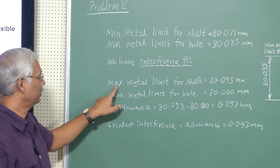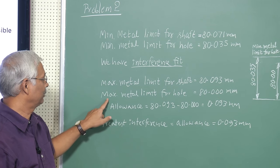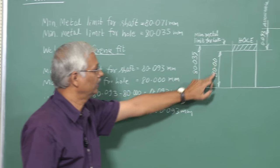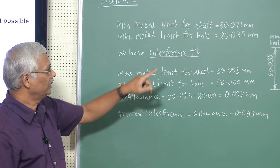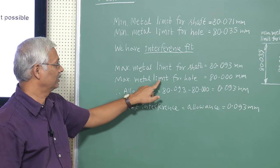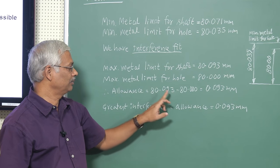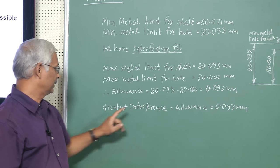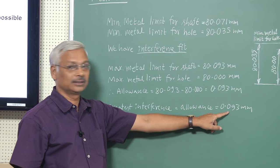The maximum metal limit for the shaft is 80.093mm and the maximum metal limit for the hole is 80mm. The difference gives the allowance: 80.093 minus 80 equals 0.093mm. The greatest interference is equal to the allowance, which is 0.093mm.